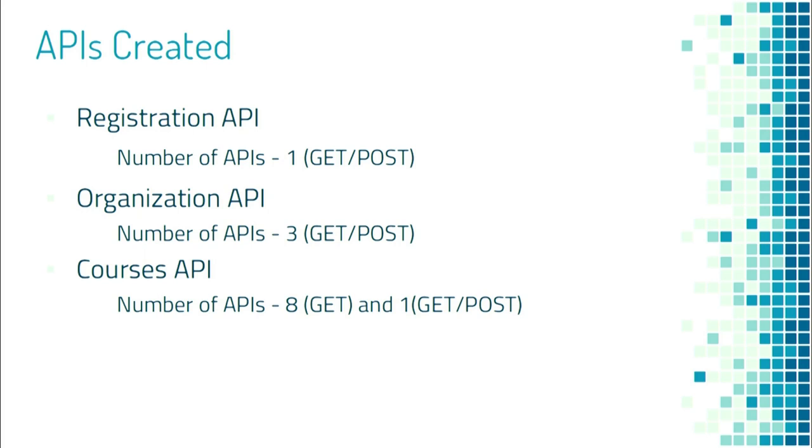So you are getting discussion forum activity for all courses of that organization, and the count of certificates for all courses of that organization — meaning the organization which you specify at the API endpoint.